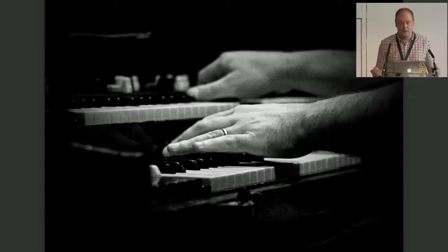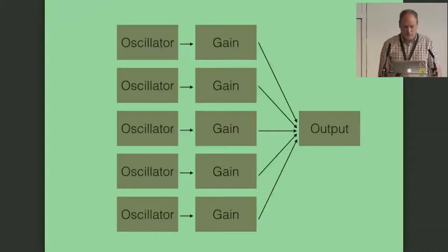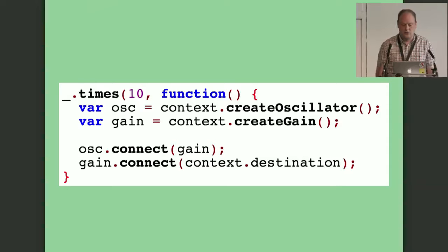Additive synthesis is used in things like the Hammond organ, where draw bars let you control the amount of each frequency that makes up each note, so you can synthesize other sounds by combining single frequencies. In the Web Audio API it's quite easy: take what we had for the theremin — an oscillator and a gain — replicate that several times and connect it to the output. They will sum together. In code we use create oscillator and create gain, connect them to the destination, and just do that a number of times.